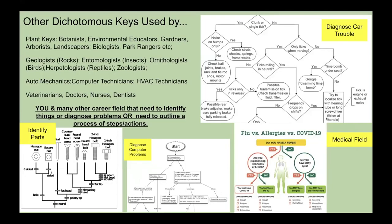Other scientists use dichotomous keys too: botanists to identify flowers, arborists for trees, biologists for animals. But not just scientists — auto mechanics might use a dichotomous key to diagnose car trouble, carpenters to identify screws and nails, and doctors and nurses might use a flowchart to decide whether a person has the flu, allergies, or COVID. Lots of different people can use dichotomous keys.